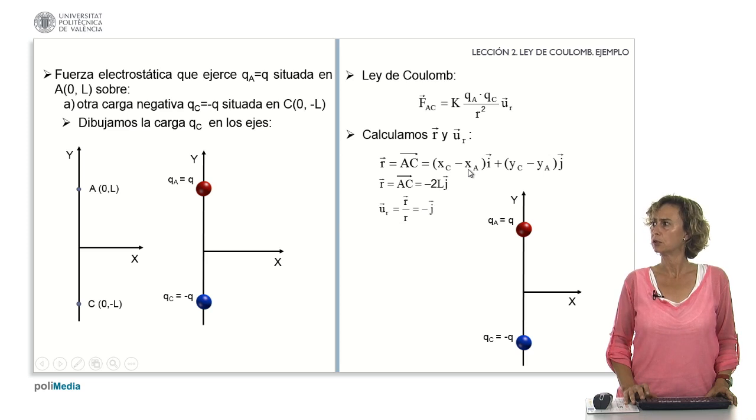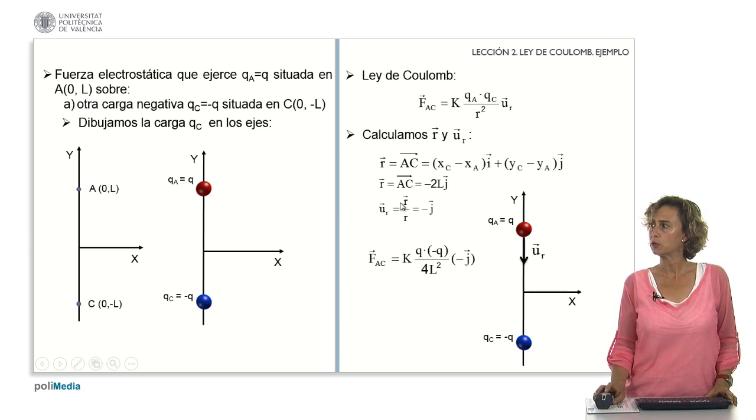Its modulus is 2L, and therefore the unitary is minus j. We draw it. We now take into account the values of Q sub A and Q sub C. Substitute these values, the value of R and the value of U sub R. And we have this expression. Let's note that one was positive and one was negative, and we have replaced it with its sign.